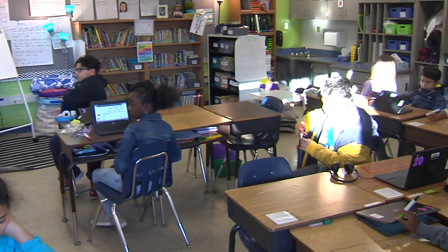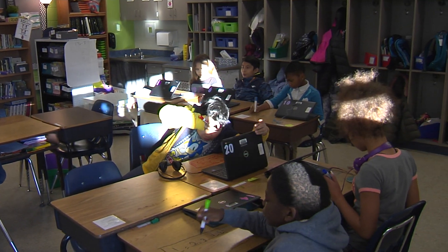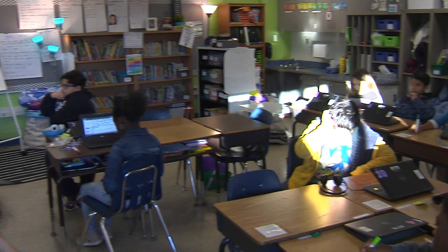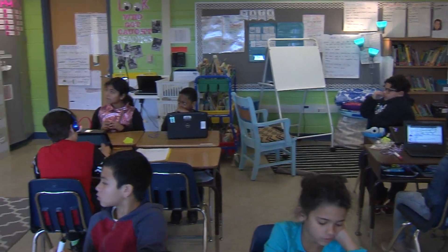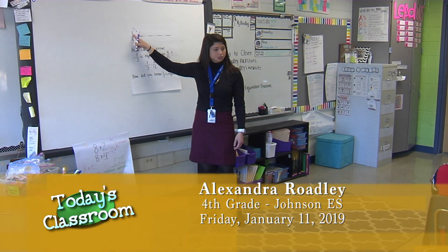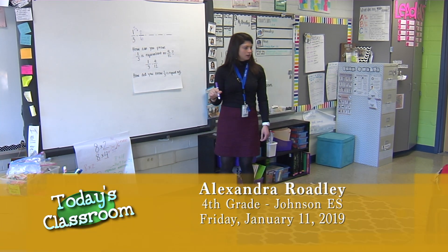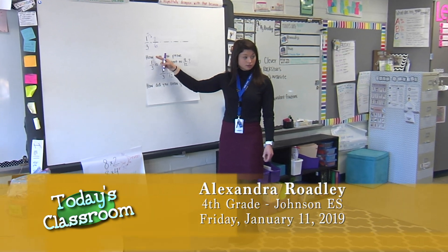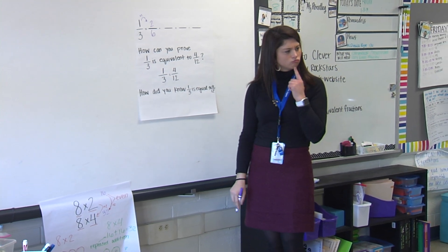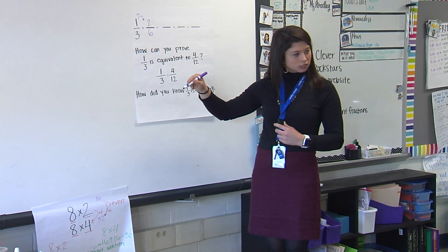How did you get to two-sixths, Jackson? For the numerator, I just added one more. Jackson, why did you add one for the numerator? Because on one-third, the one is in the numerator's place, so we're just going to add what's in the numerator each time — we are going to skip count by ones. What about the denominator, Zaniyah? Skip count by three, four, five.